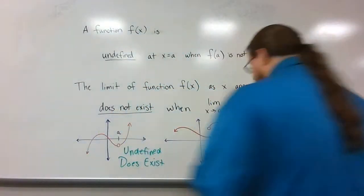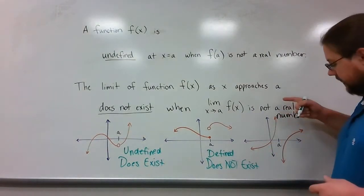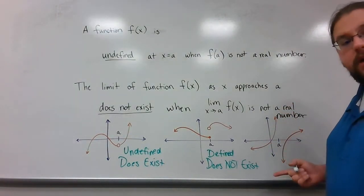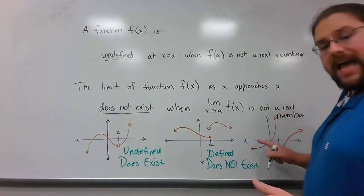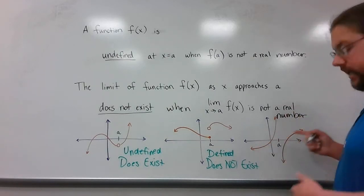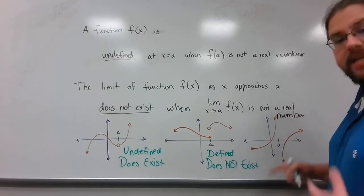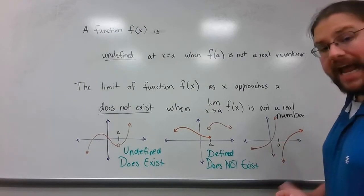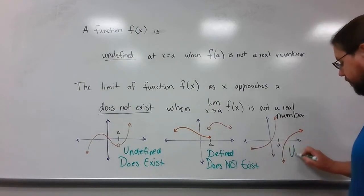Last one. In this case, letter a is essentially a vertical asymptote. So what's happening on the left is it's going toward positive infinity, and on the right, it's going toward negative infinity. This would be a situation where if you plugged in a, you're not going to get a number. It's going to be undefined.